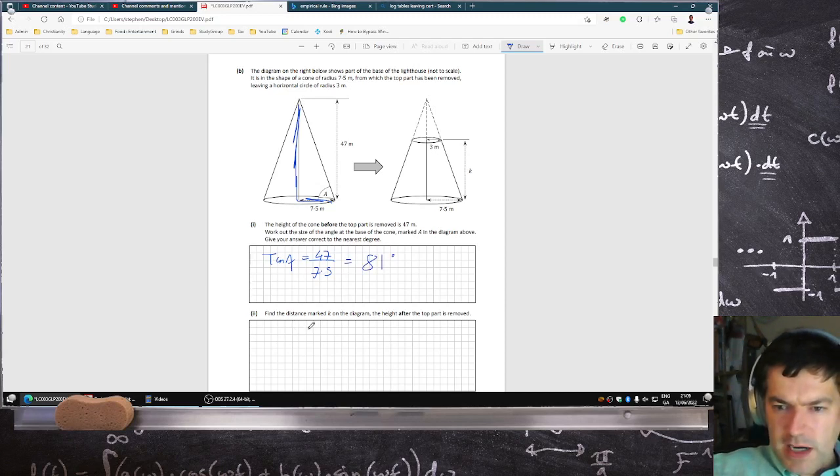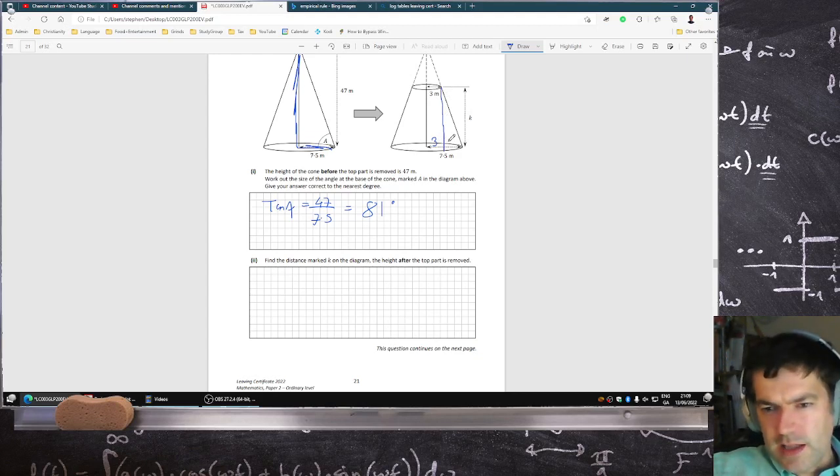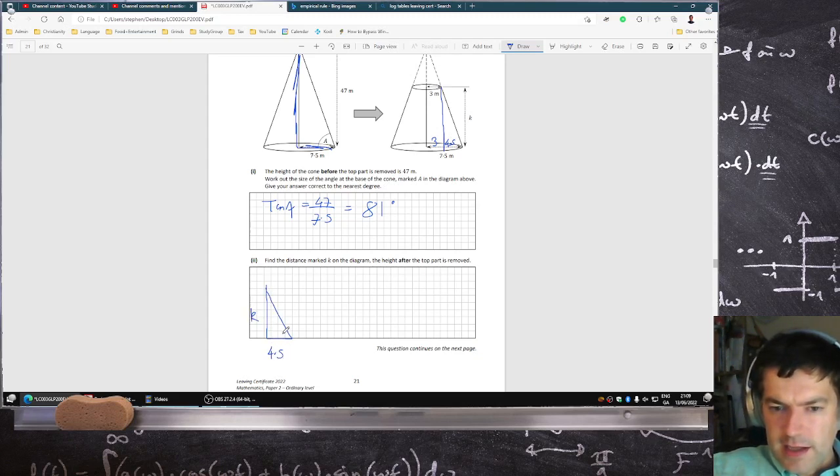Find the distance marked k. That's this distance here. I understand why some of you were asking for me to do this question, because this one's quite tricky. I think I have to draw a straight line down here, and if that's 3, yeah, that's 4.5. So if I can draw that triangle there, that's 4.5, and that's k, and that's angle a, which is 81 degrees, which you know. So again, you can say tan 81 equals k over 4.5.